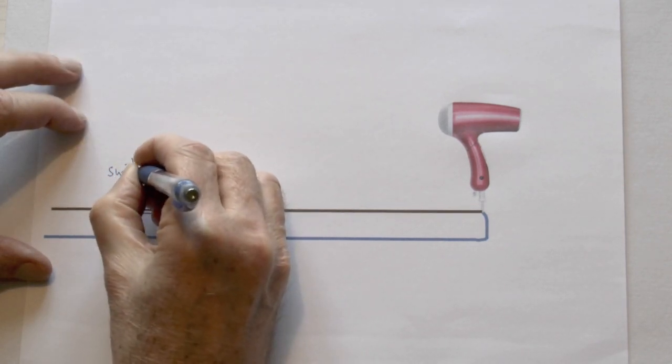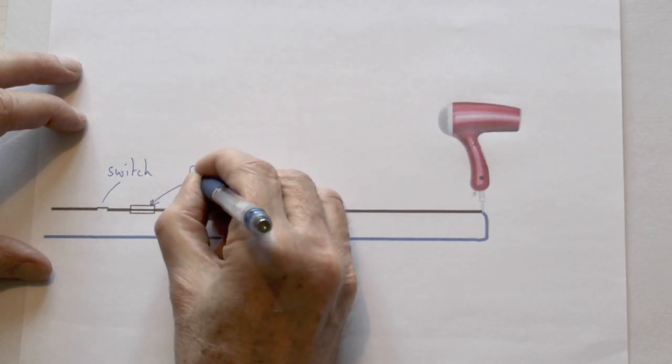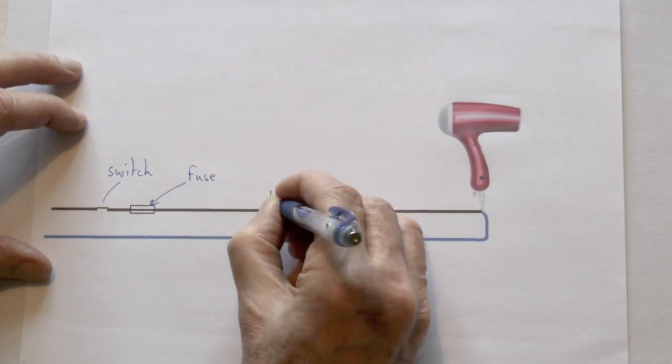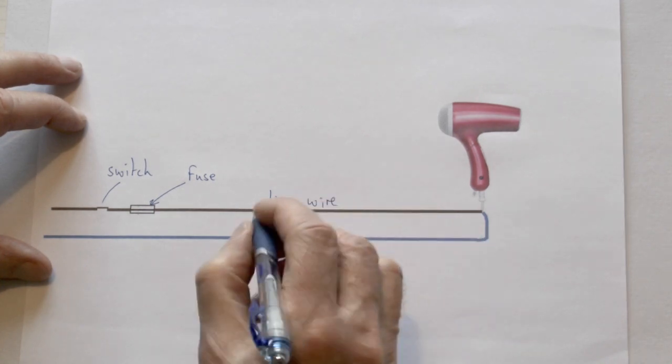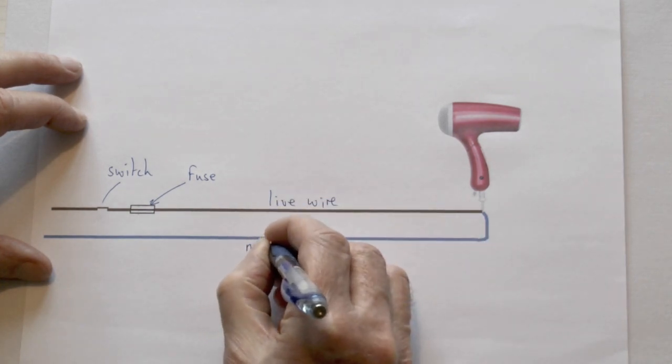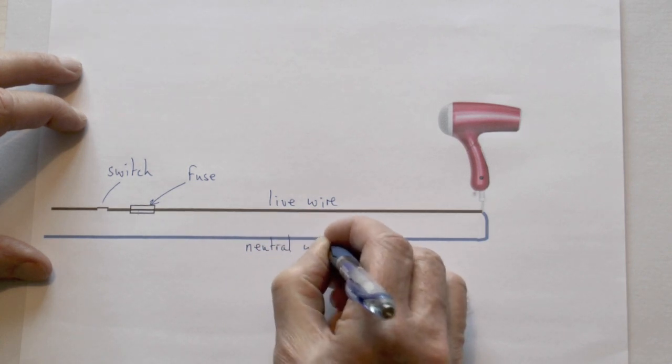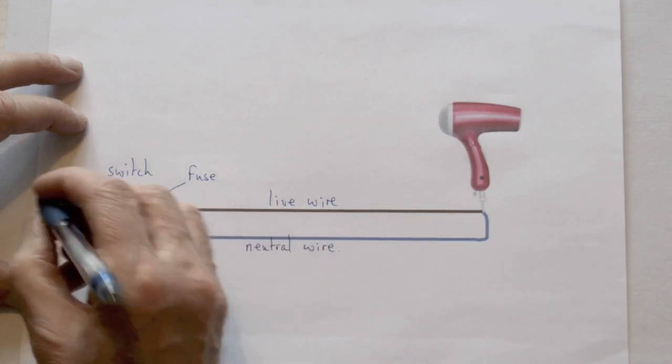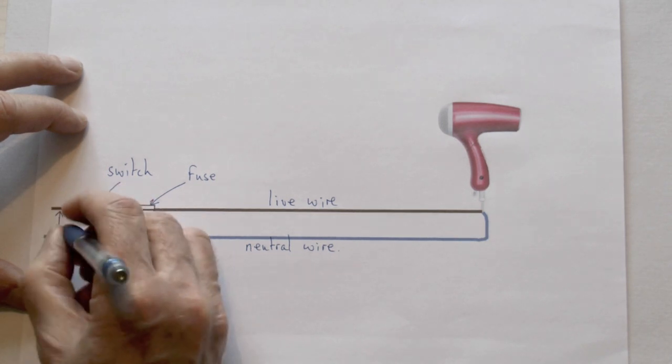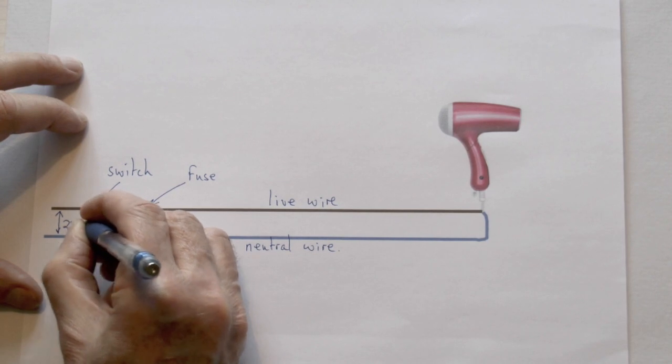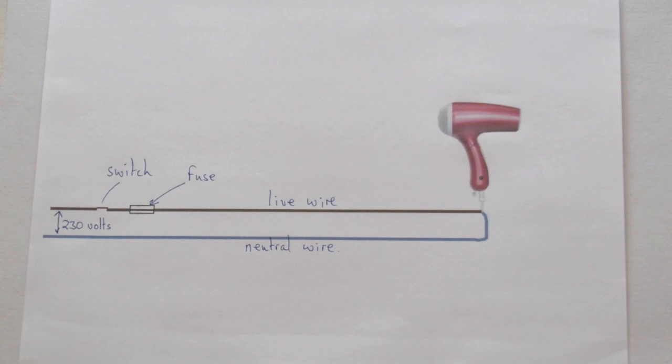This is a rather amplified circuit for a hair dryer. A hair dryer typically would not have an earth - it would only have a connection to the live and to the neutral. The live wire will have a fuse in it to protect for an overload and will have a switch. The current is delivered by the live wire - the electrical energy originally from the power station is pushed through the live wire. The neutral wire simply serves there to return the electricity so that there is a complete circuit.